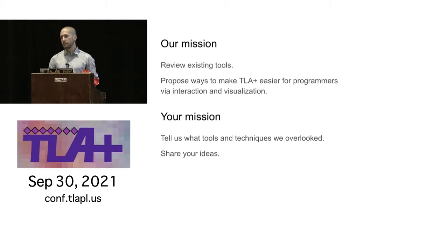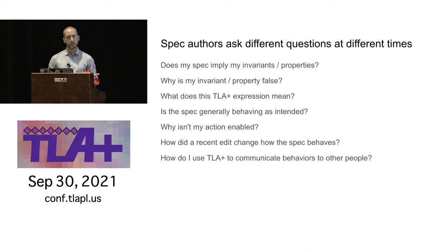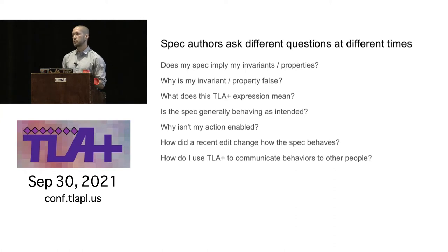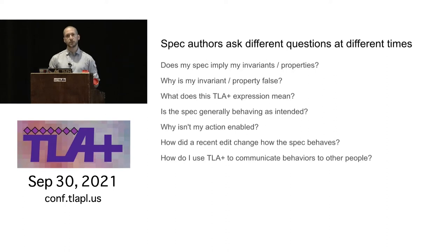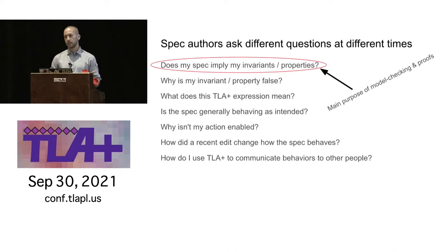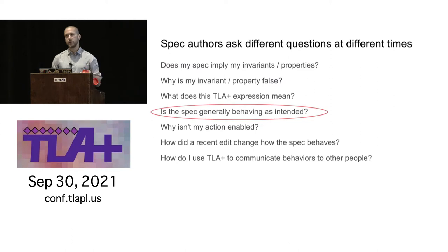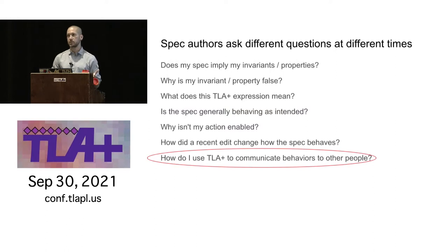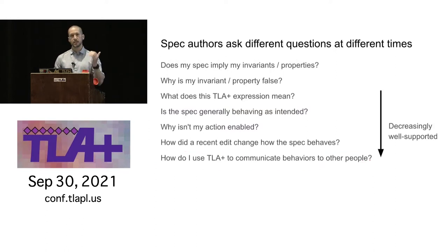Spec authors have various questions they ask about their specs. We think they ask different questions at different times in spec development, and different tools are better or worse for answering certain kinds. The first question — does the system obey an invariant? — is the main purpose of TLA+, super well supported by production-level tools. But as we go down to vaguer questions like 'is the spec generally behaving as intended?' or 'how do I use TLA+ to communicate with other people?', these are much less well supported.